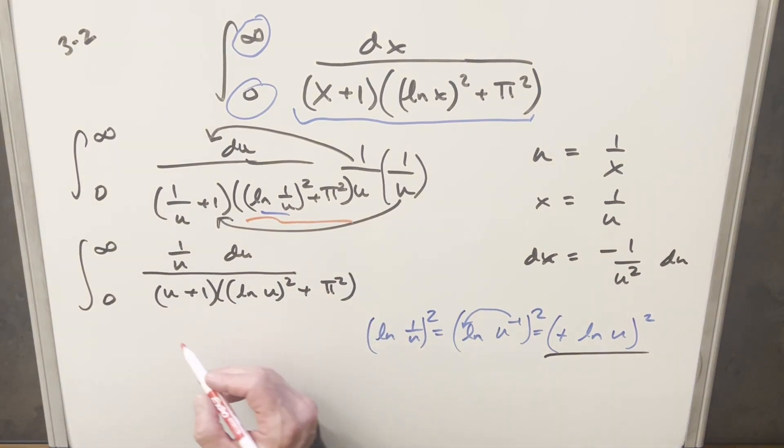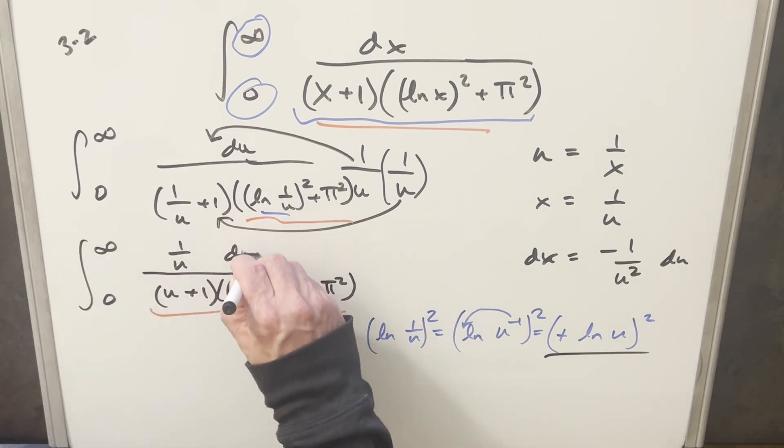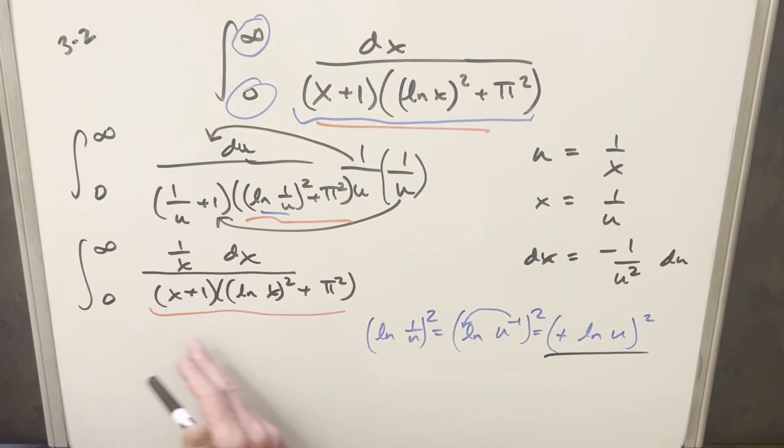But then just notice, now we have the same denominator here that we have in our original problem, just a different variable. But I can fix the variable and just do a variable change, because we're within a definite integral. So let's just change everything back to x. And now that we have the same variable name and the exact same denominator, we're in good shape to actually add these two integrals together.